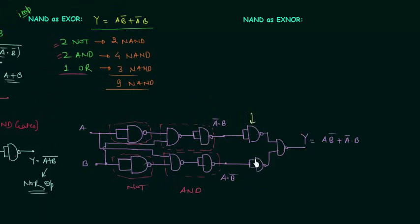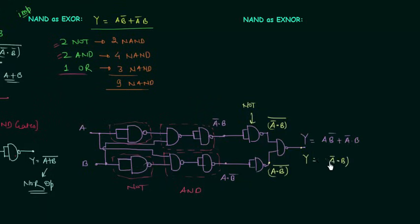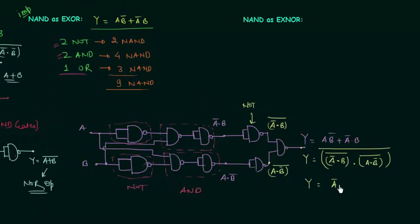This gate is working as a NOT gate with input A complement and B, giving output A complement and B complement. Similarly here we have A and B complement and its complement. Applying De Morgan's law, Y simplifies to A complement and B or A and B complement, which is A XOR B.